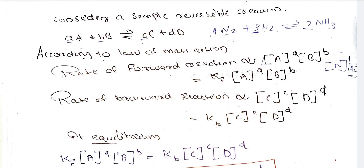For a general reaction, the amounts are represented by small letters a, b, c, and d, which denote the stoichiometric coefficients and concentrations of the reactants and products.